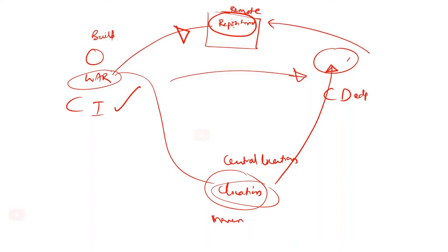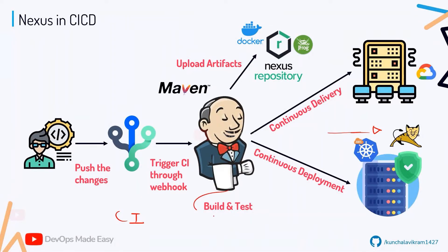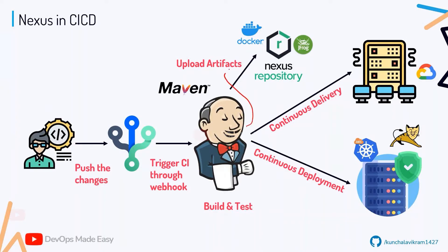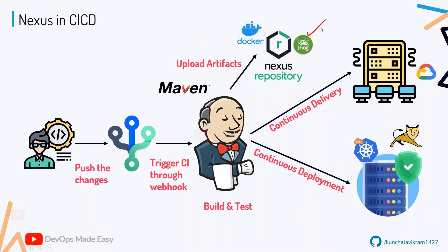This internal repository is completely local to your network and office infrastructure, so no one can access it from outside. Once the build is done, we upload the artifacts to the Nexus repository. The artifact can be a container image, war file, zip file — anything can be pushed to this repository. Nexus is open source, while JFrog Artifactory is a premium alternative. People prefer Nexus in some organizations and JFrog in others.